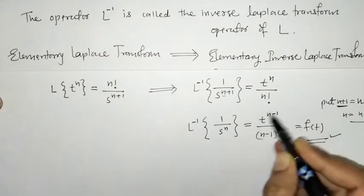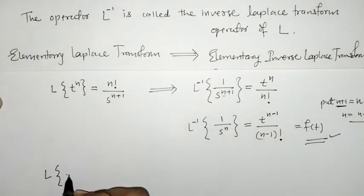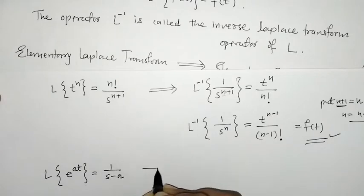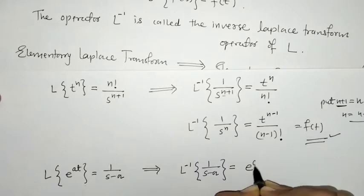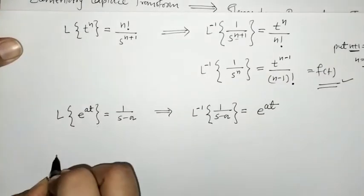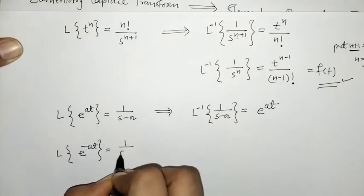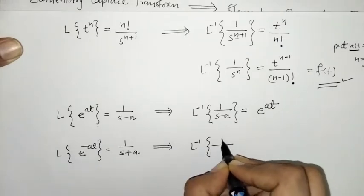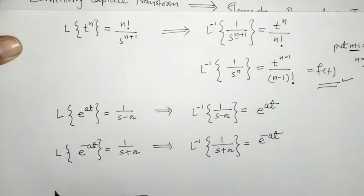Next, we have L{e^(at)} = 1/(s-a), so from this, L⁻¹{1/(s-a)} = e^(at). Similarly, L{e^(-at)} = 1/(s+a), so L⁻¹{1/(s+a)} = e^(-at).